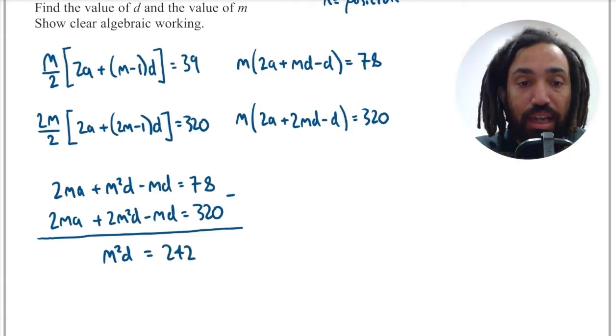Now what values can M and D take? Well I know they have to be integer values. At least I know that M is definitely an integer because it represents a position in a sequence. And I also know that D is prime so that's also an integer as well.